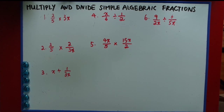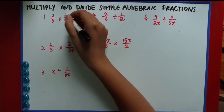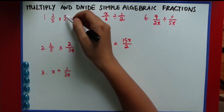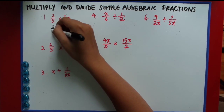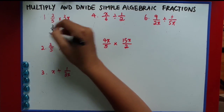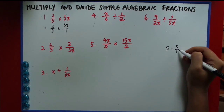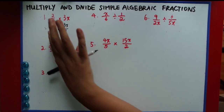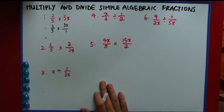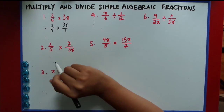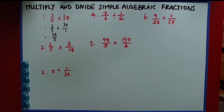The first one is a pretty simple one: 2 over 5 times 3x. Now this may look a little confusing because one is a number on its own and one is a fraction. What 3x actually is, is 3x over 1. If you have 5, it is the same as 5 over 1 — the denominator is 1, but we usually don't write it. Now we have two fractions. All you have to do for multiplication is top times top, bottom times bottom. So 2 times 3x gives 6x, and the bottom is 5 times 1, which is 5.